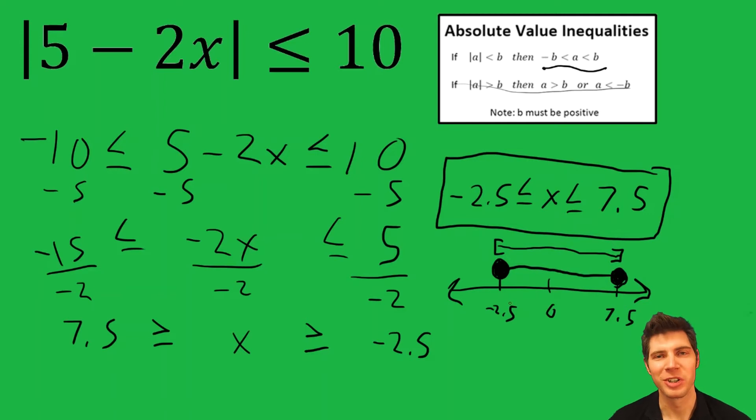There's one other thing we could do. We could write this in set notation, which would be negative 2.5 comma 7.5. So all of these are valid answers depending on what the teacher is asking for.